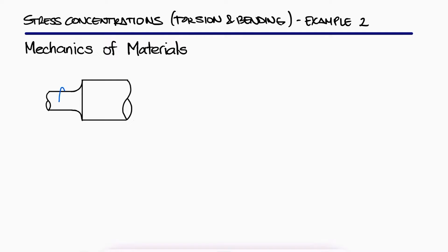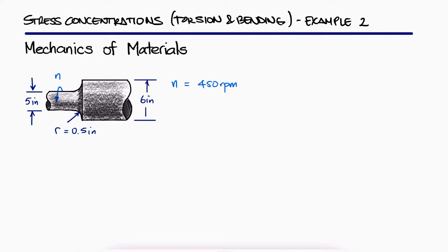The stepped shaft shown rotates at 450 revolutions per minute. If the radius of the fillet is 0.5 inches, what is the maximum power that can be transmitted without exceeding an allowable shearing stress of 7500 psi?